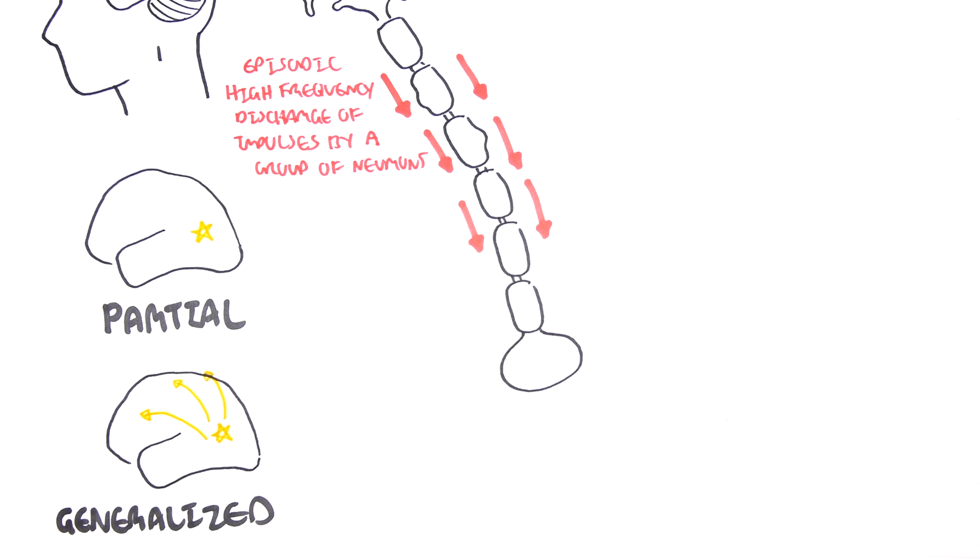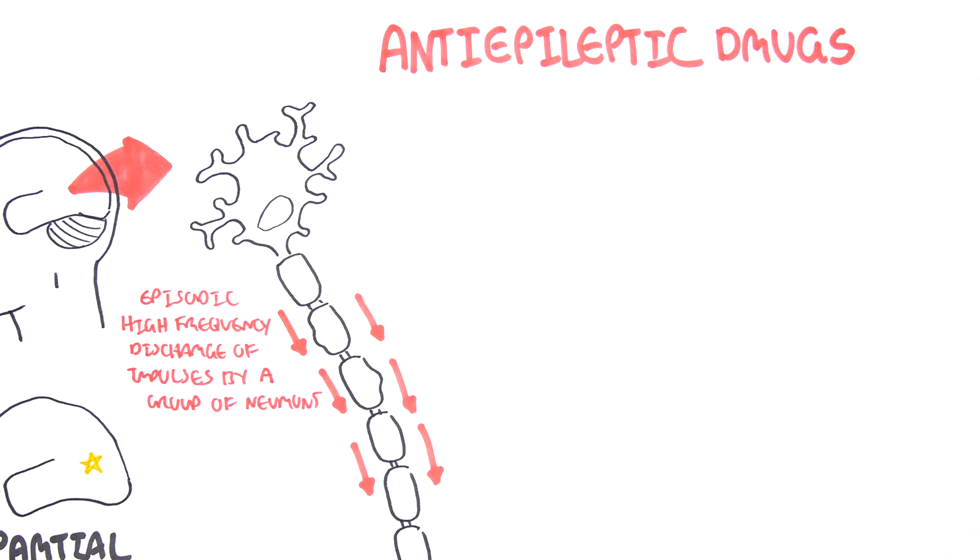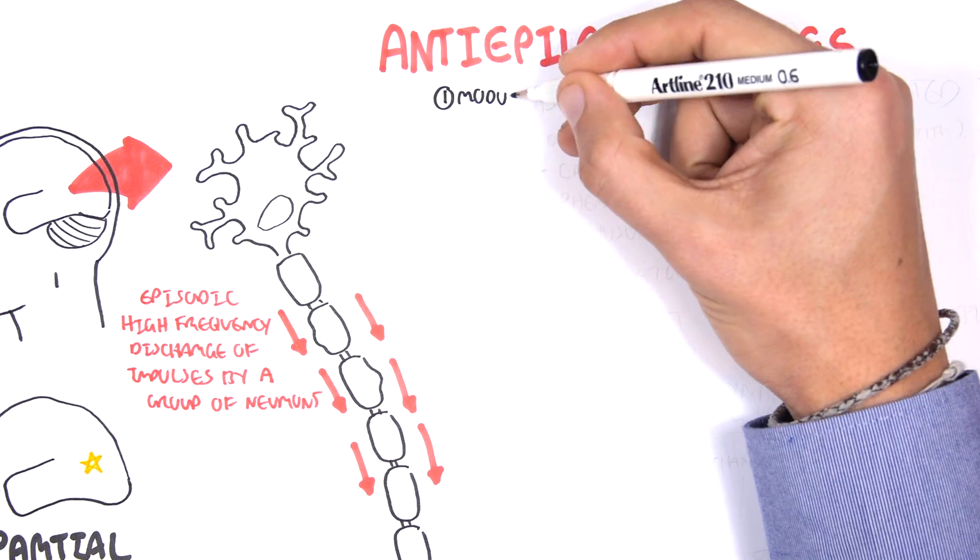Before we go into the pharmacology of epilepsy, I think it's important to watch a video on how neurons send signals to one another. I have a video on that which I'll provide the link. Epilepsy is characterized by seizures where the neurons are excited and send all these impulses all the time.